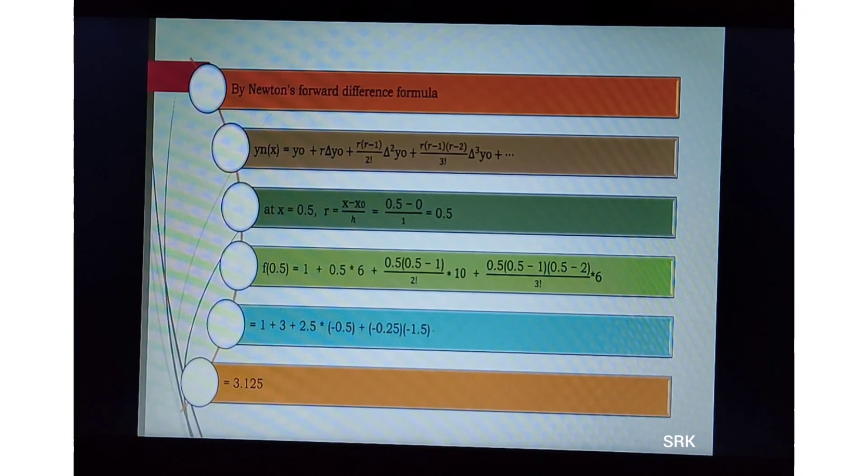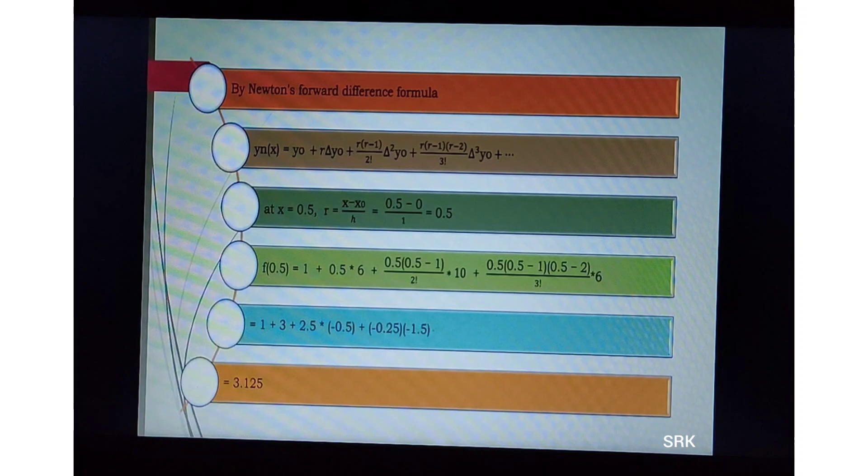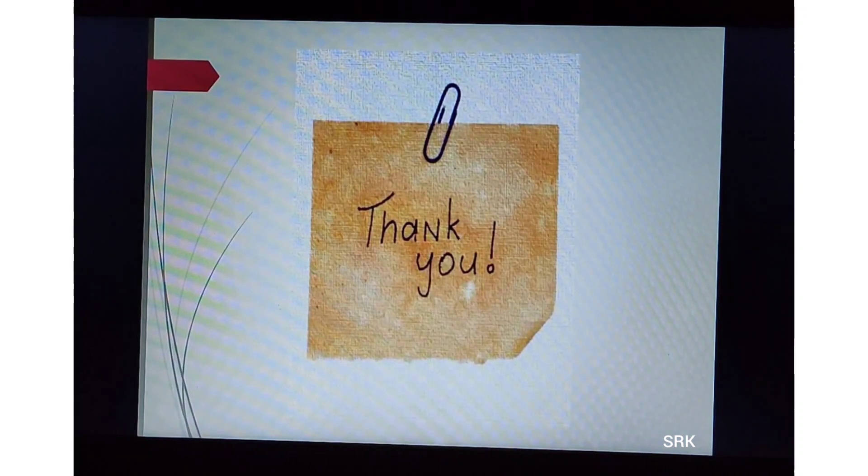f of 0.5 equals 1 plus 0.5 into 6 plus 0.5 into 0.5 minus 1 divided by 2 factorial into 10 plus 0.5 into 0.5 minus 1 into 0.5 minus 2 divided by 3 factorial into 6. We have substituted the values obtained from the previous table. After simplification, we get f of 0.5 equals 3.125. Thank you.